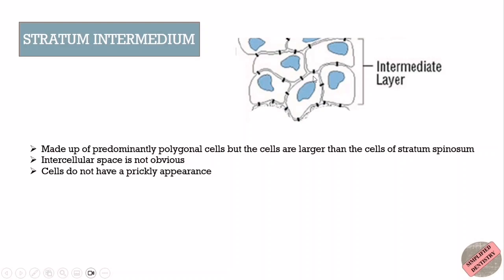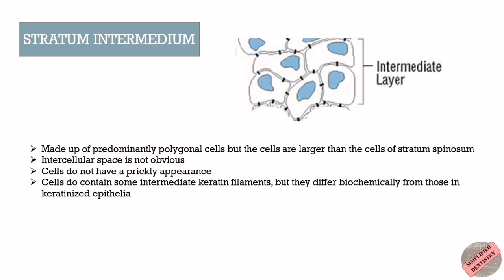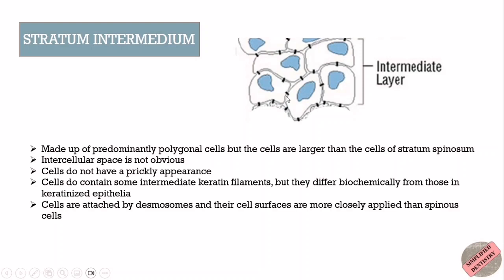These cells do contain some intermediate keratin filaments, but biochemically they differ from those present in keratinizing epithelia and are sparsely distributed within the cells. The cells of stratum intermedium are attached by desmosomes, and their cell surfaces are more closely applied to each other than those of the spinous cells — which is why the intercellular space is not so enlarged in the intermediate layer.